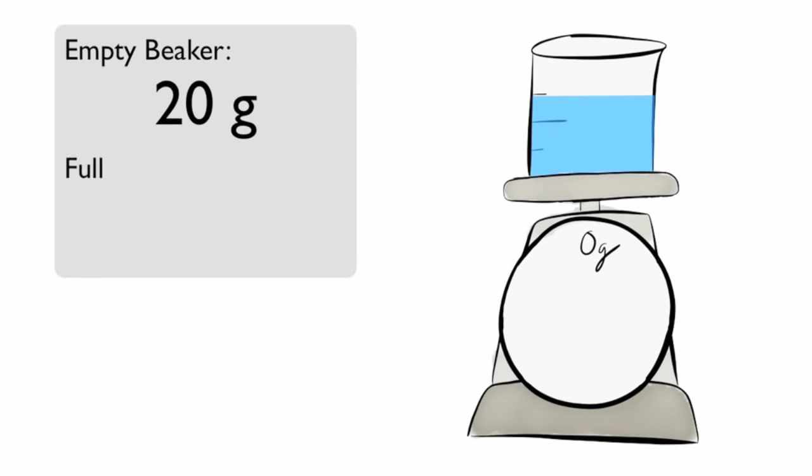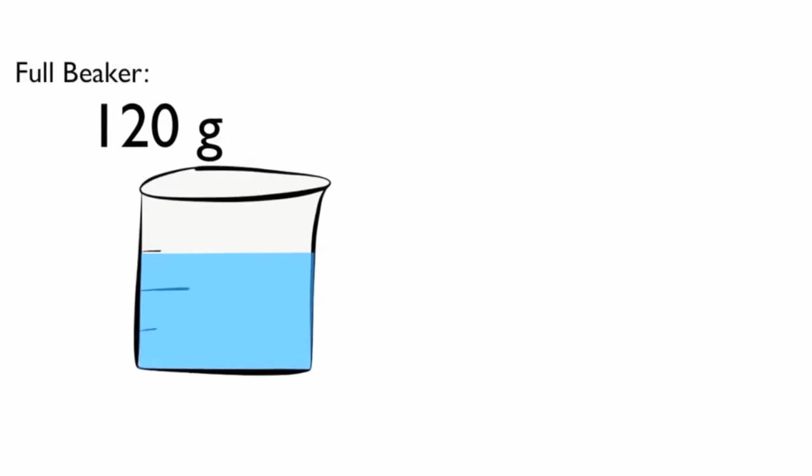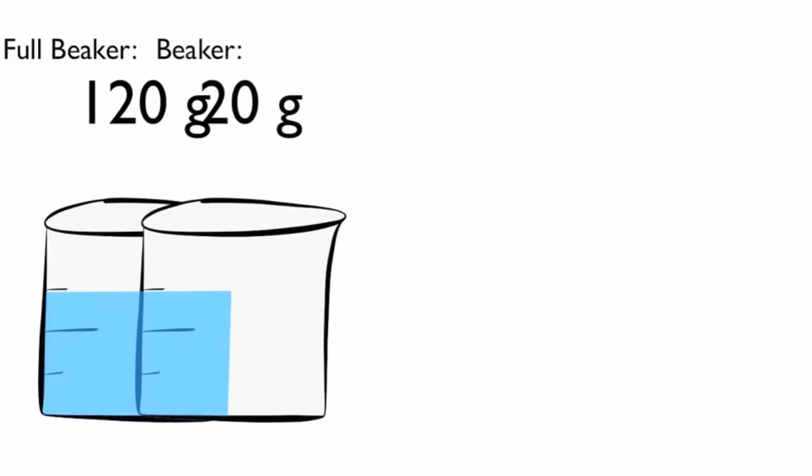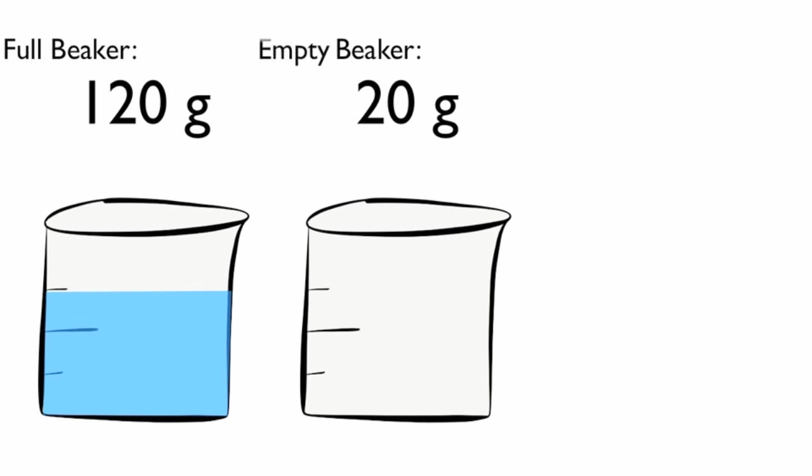Next, use the scale to find the mass of the filled beaker. To find the mass of just the water, we need to subtract the mass of the empty beaker from the full beaker. Our sample is 100 grams.